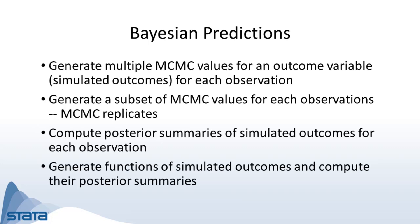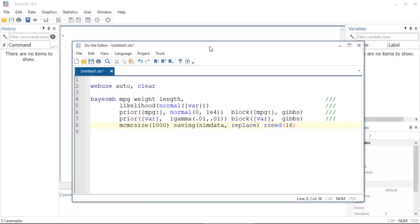Unlike classical predictions, Bayesian predictions generate multiple MCMC values for each observation. For example, if we were using the auto dataset and wanted to compute Bayesian predictions for miles per gallon, we would obtain 1,000 or 10,000 or whatever number of simulated values for each of the 74 observations. We can then calculate summaries such as a posterior mean or median, producing one value per observation.